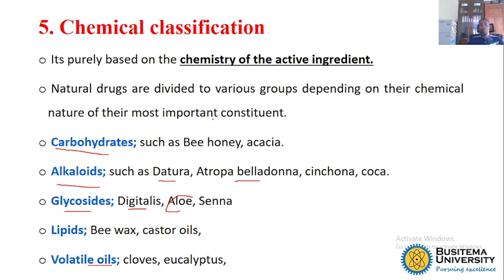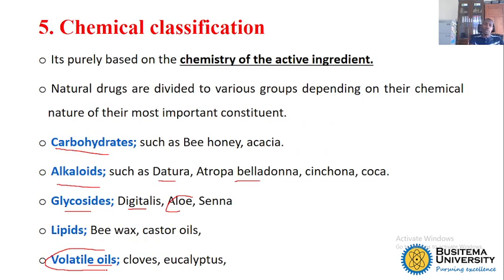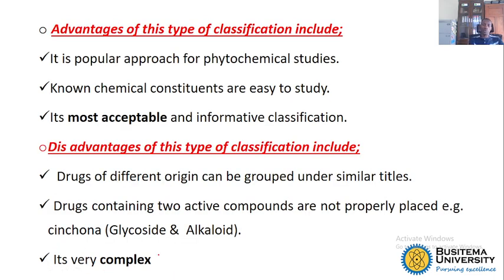Understanding the chemical classification gives you a clue on how some drugs will be extracted. For example, if eucalyptus contains volatile oils, using heat means these oils may be lost due to high temperatures. The advantage is that it is the most acceptable and informative classification — knowing the chemistry can help you understand how to extract a particular drug. The disadvantage is that it is complex because there are many active ingredients in various chemicals.